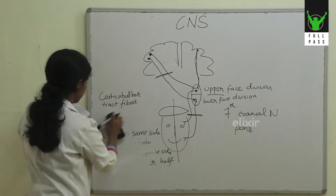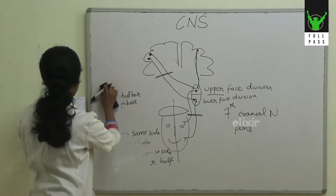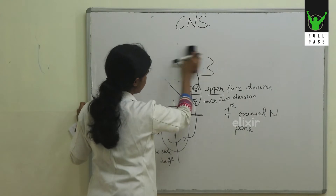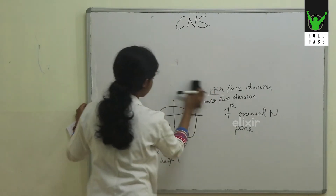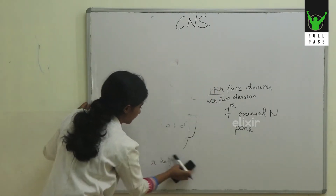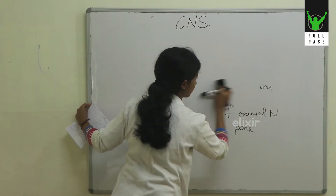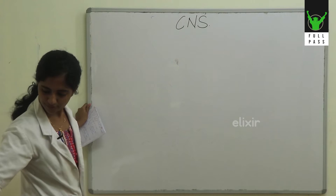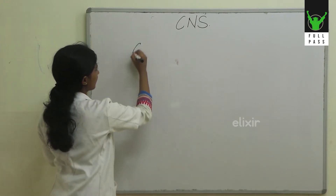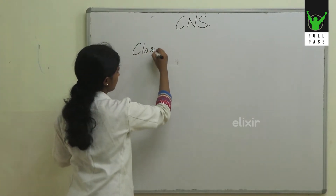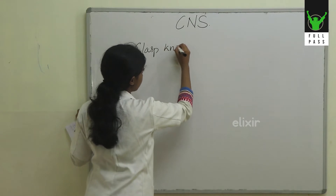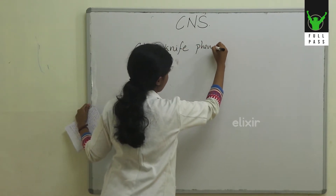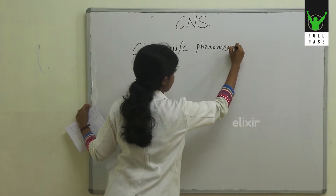Moving on to the next question regarding clasp knife spasticity, cogwheel rigidity and related topics. What is clasp knife phenomenon or clasp knife spasticity?